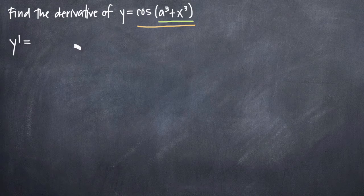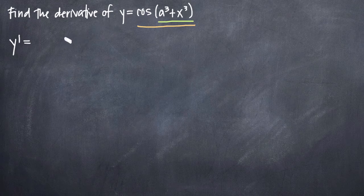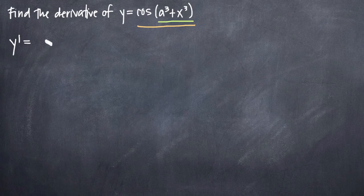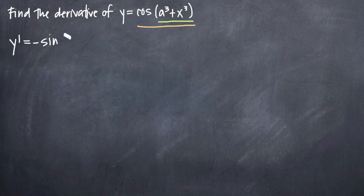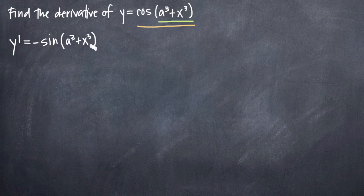A lot of people talk about the layers of an onion and peeling them back. Let's take the derivative of the outside function — cosine of the inside. We know the derivative of cosine of x is negative sine of x, so we write negative sine, but our x here is a cubed plus x cubed, and we're just going to leave it completely untouched. All we were concerned about was the outside, which gives us negative sine. So we leave the inside alone — that's the derivative of the outside function.